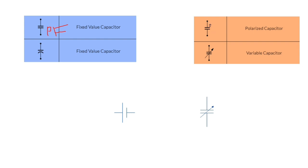But for these, we have a plus sign here and a minus sign here, so these are polarized capacitors. This one with an arrow is a normal capacitor like the previous one, but this arrow means this capacitor is variable.